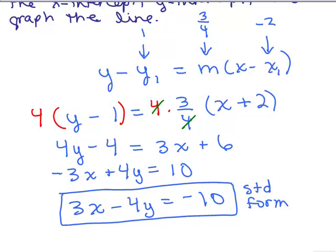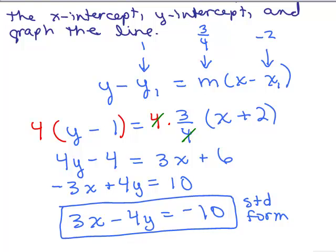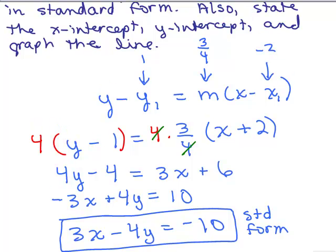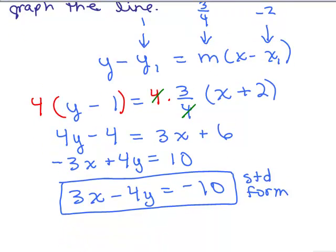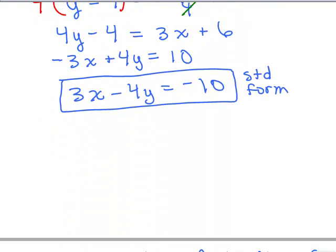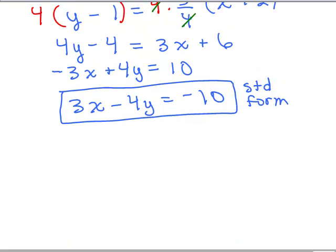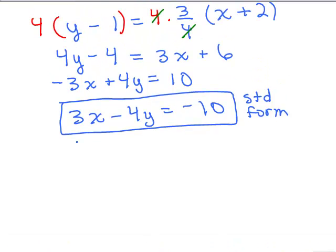So far we've got the equation in standard form. What else was I asked to get? The x-intercept, the y-intercept, and graph the line. Getting the x and y intercepts — standard form is useful for that because it's easy to plug in 0 for x and 0 for y. For the x-intercept, we put in 0 for the y, and for the y-intercept, we put in 0 for the x.